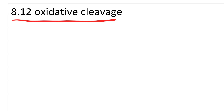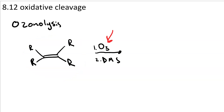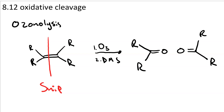Oxidative cleavage using ozonolysis: we can snip across the double bond of an alkene. If we treat an alkene first with ozone O3, and second with dimethyl sulfide (DMS), we can snip across the double bond. Where the double bond was, you end up with carbonyls — two fragments that each have a carbonyl. Essentially what we're doing is we're inserting an oxygen molecule into that pi bond.